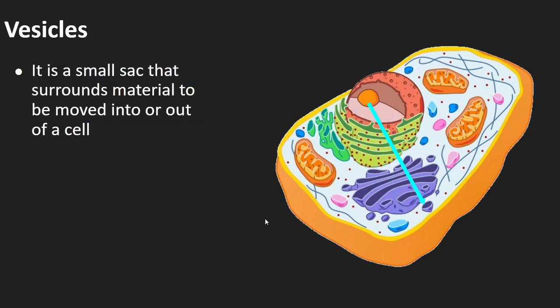Vesicles are like really miniature little bubbles made with the lipid bilayer, just like all the other membranes. That's why a vesicle can move right up next to the cell membrane and merge with it — because it's made out of the same stuff. Once it gets to the edge, you can take whatever's in the bubble and shove it out. That's what cells do, and your whole body is kind of based around that.